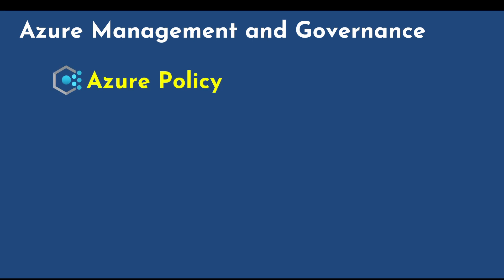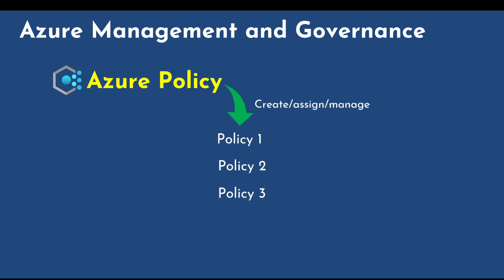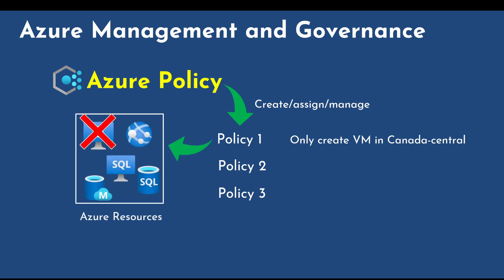Now let's have a look at Azure Policy. Azure Policy is a service in Azure that enables you to create, assign, and manage policies that enforce rules so that configurations stay compliant. For example, you create a policy which states that you can only create virtual machines in the Canada Central region. If you try to create one in any other location, it will throw an error. Also, it will check if there are any existing virtual machines in any other region and flag them as non-compliant. So these policies audit and control your resources.